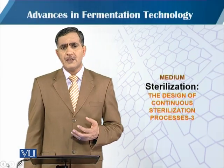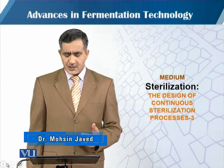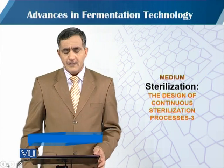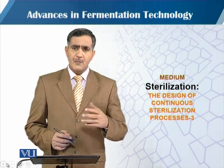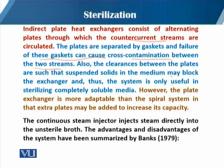In this module, we will continue the same topic as discussed in our previous module — the design of continuous sterilization, specifically the indirect method. In the previous module we talked about the spiral heat exchanger, but in this module we will talk about indirect plate heat exchangers that consist of alternating plates through which counter-current streams are circulated. The plates are separated by gaskets, and failure of these gaskets can cause cross-contamination between the two streams. Also, the clearance between the plates is such that suspended solids in the medium may block the exchangers, so the system is only useful for sterilizing completely soluble medium.